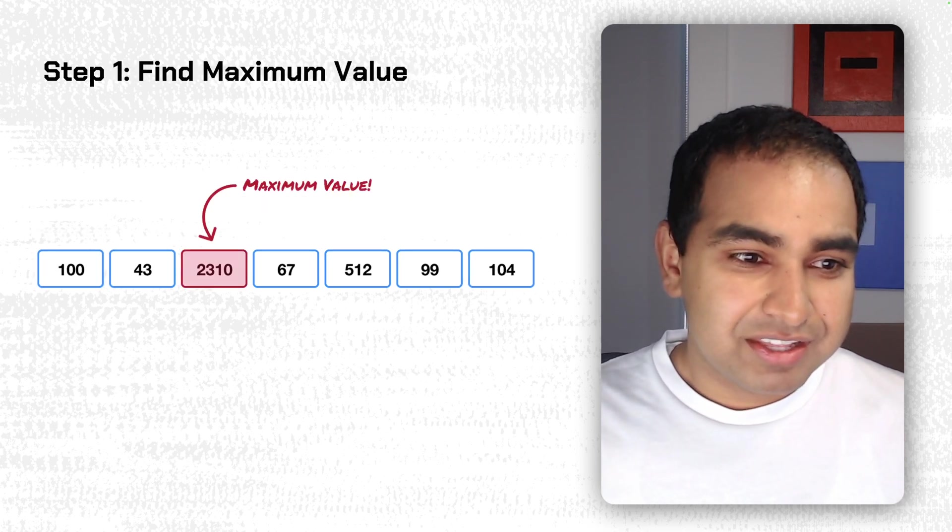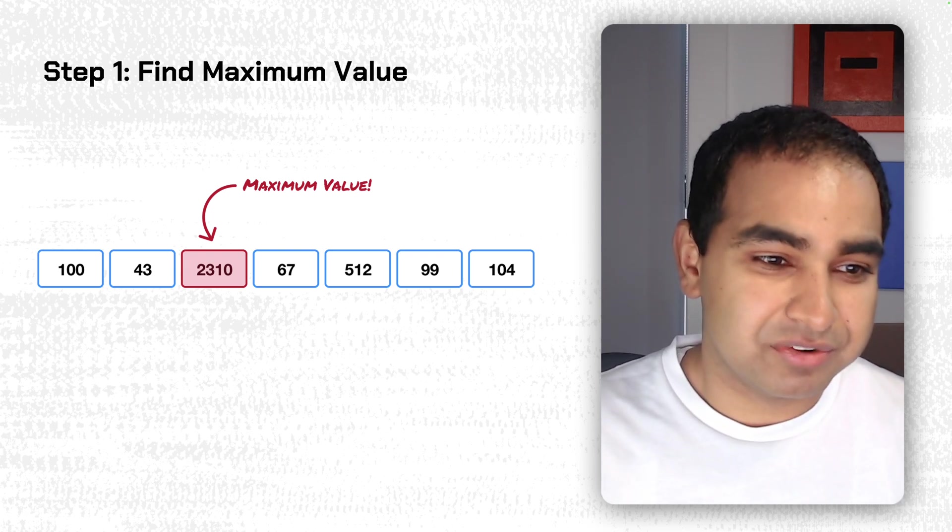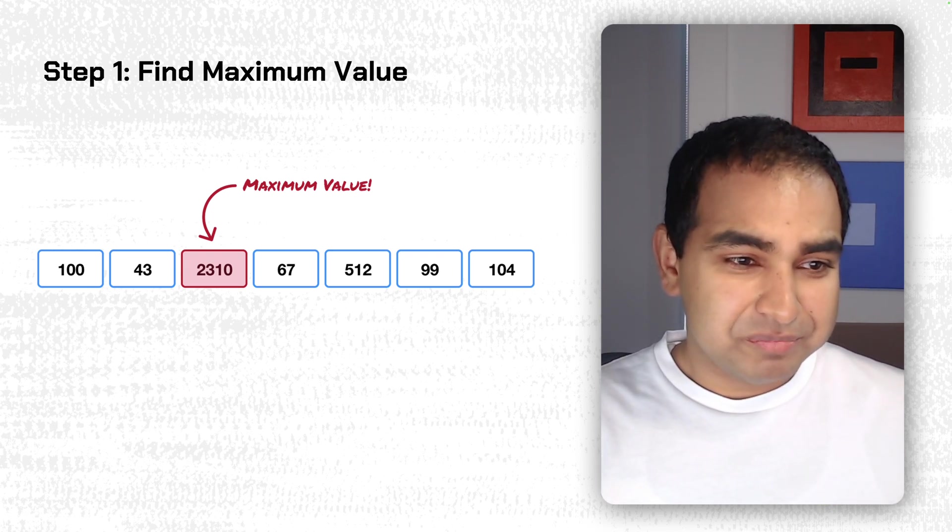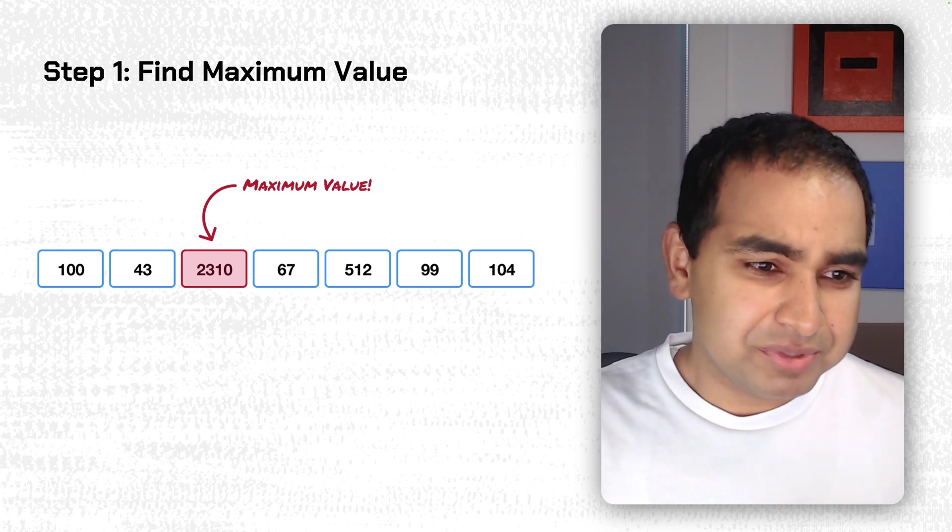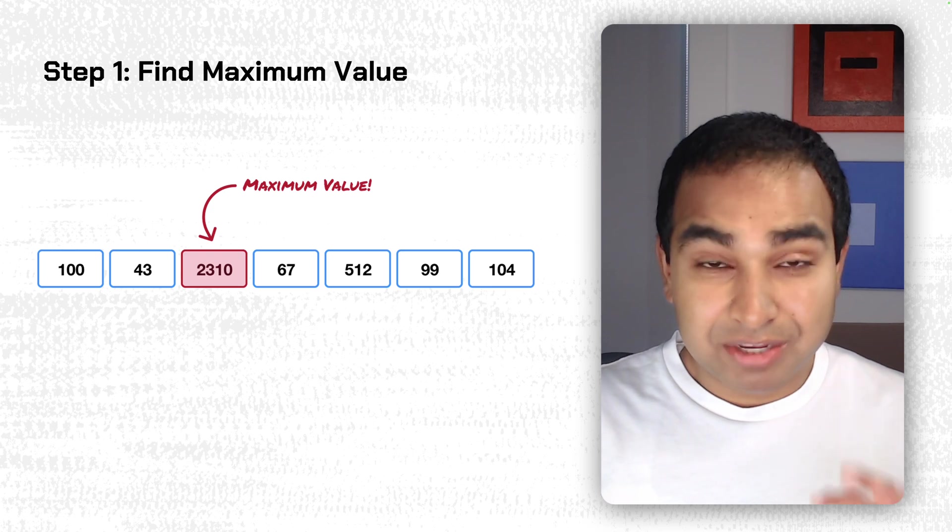The first step is we need to find the maximum value. This is a common theme you'll see also with CountingSort as well. So, the largest value in our current input is 2310. It is the largest number. Now, the next step,